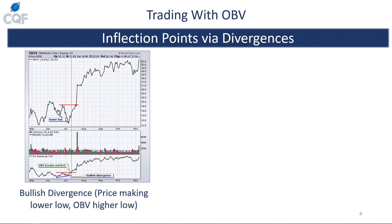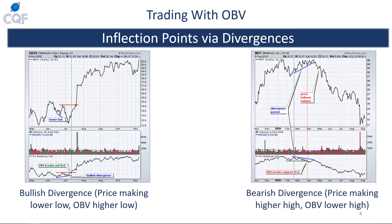You can also identify inflection points or trend reversals via divergences in OBV. Here we have Starbucks displaying a bullish divergence — the price is making a lower low from mid-June to mid-July, but OBV is making a higher low. This is called a bullish divergence and is a sign of a potential reversal. Over here we have MDT showing a bearish divergence — price is making a higher high and OBV is doing the opposite, making a lower high, which would signal a potential future downswing.